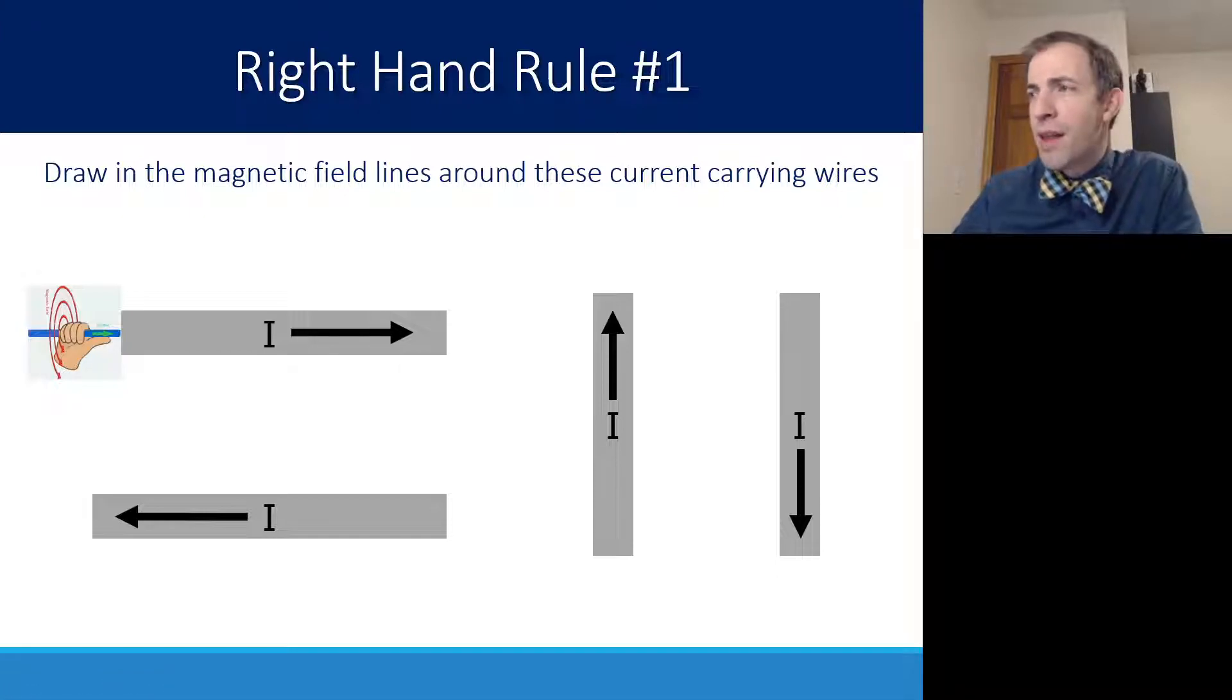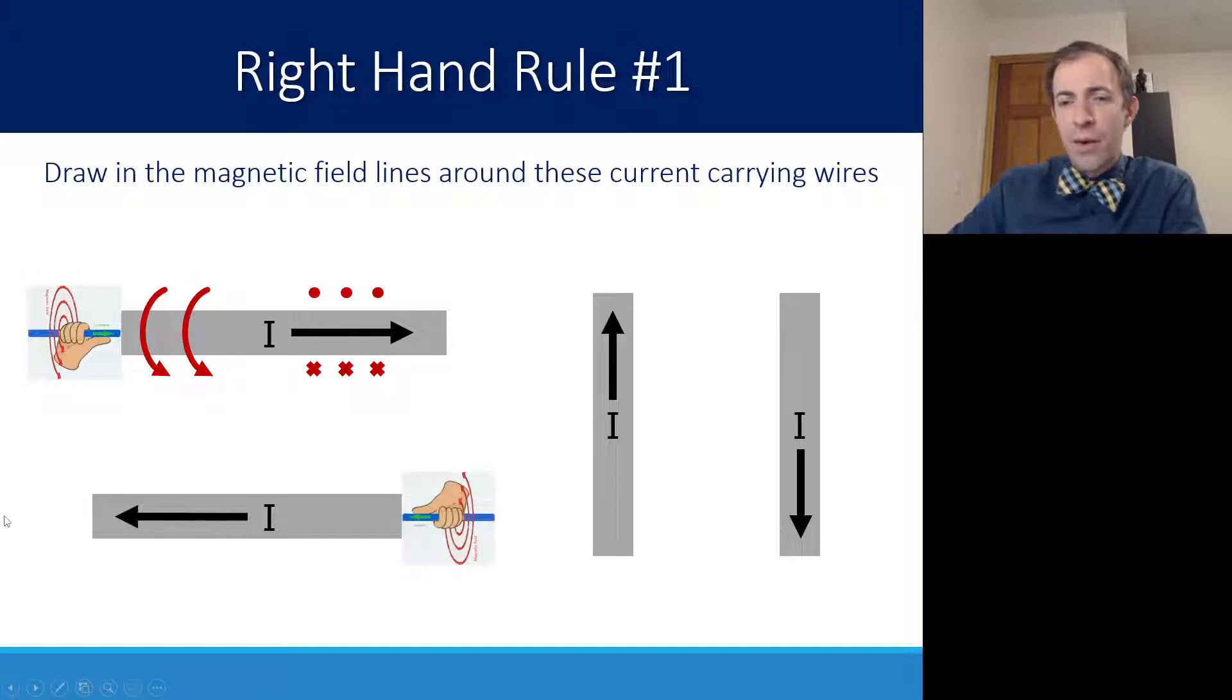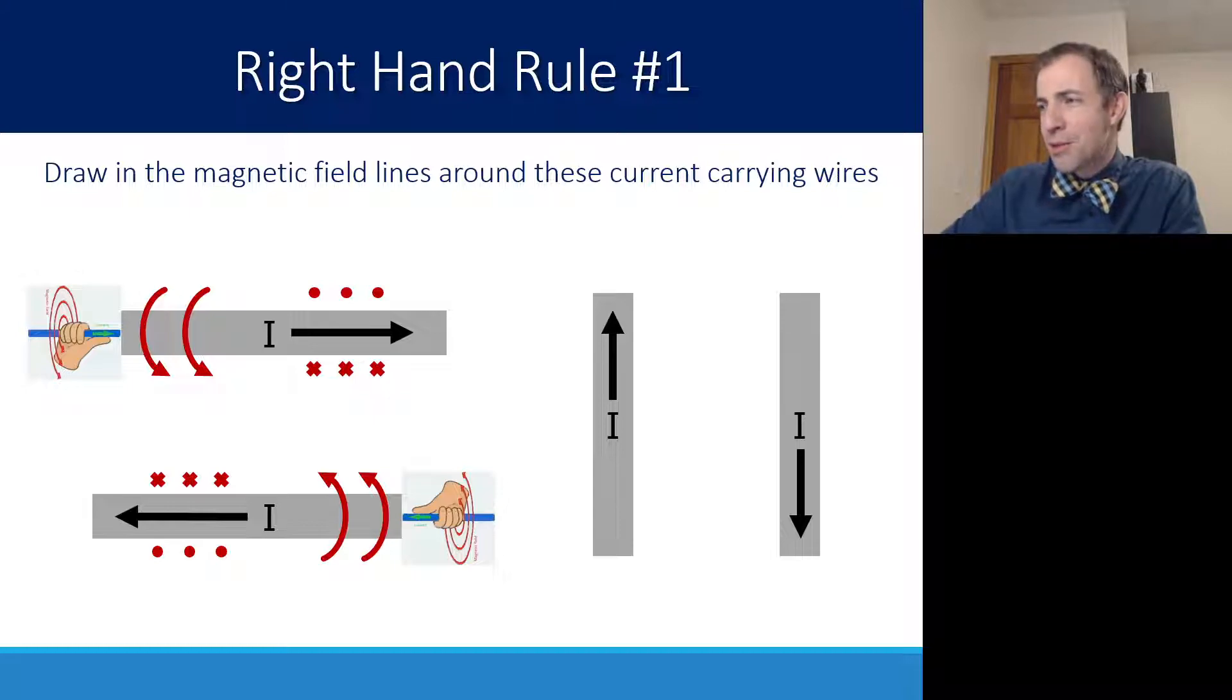A couple different ways that we could draw that. We could draw those swooping vectors, showing them curling over the wire, just like we have our fingers curling over. Or we could draw dots on the top and X's on the bottom, showing that it comes out of the screen on the top and into the screen on the bottom. If we look at the arrow below, the current is going to the left. If we grab that wire, thumb pointing to the left, our fingers wrap around where it's coming out of the board, into the board, or out of the screen, into the screen, out on the bottom, in on the top.